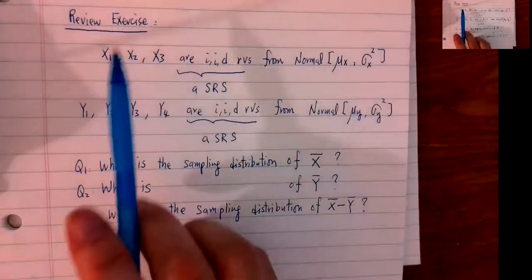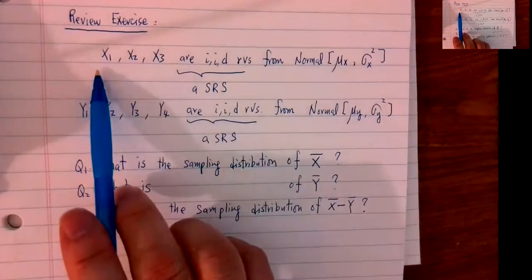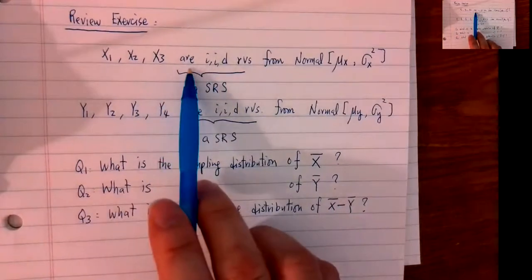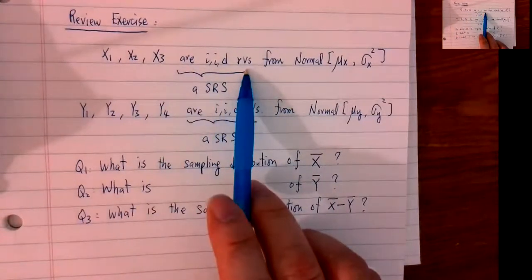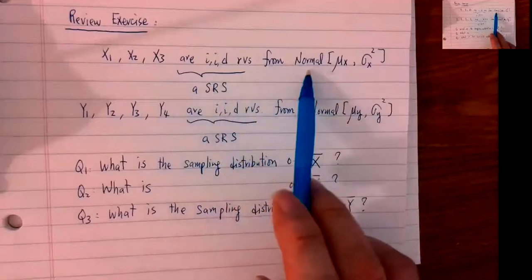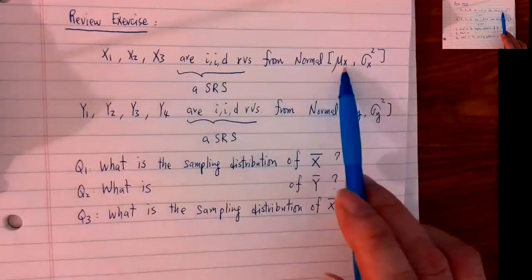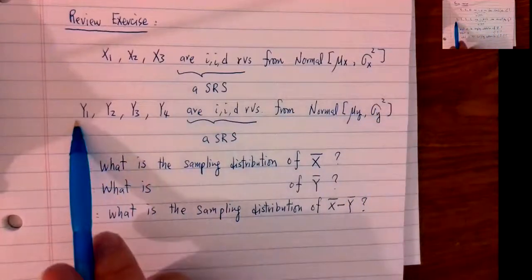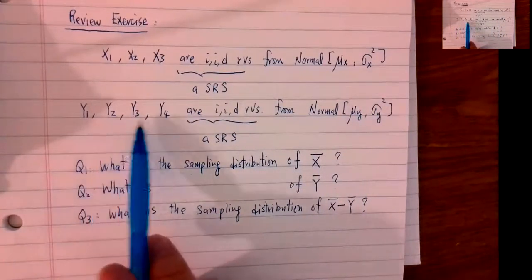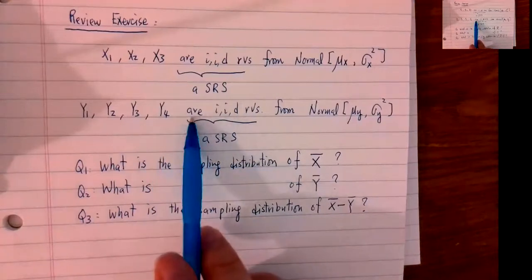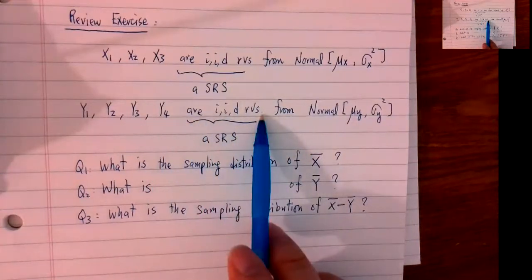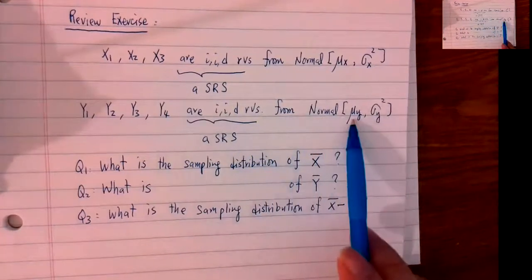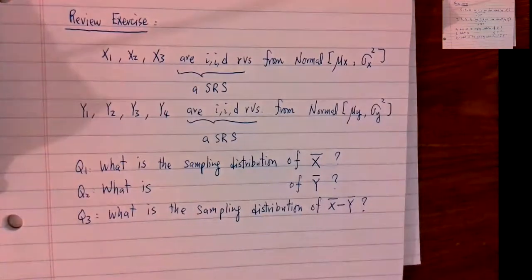Let's read the question again. Suppose x1, x2, x3 is a sequence of IID random variables — a simple random sample from a normal population with mean μx and variance σ². Also, y1, y2, y3, y4 is a sequence of IID random variables from a normal population with mean μy and variance σy².